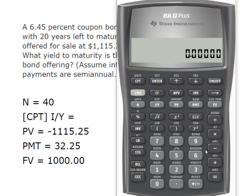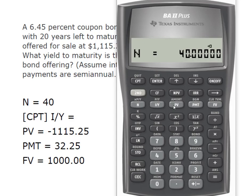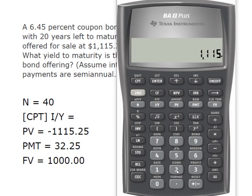All right, so we're going to go ahead and plug it in. We have an N of 40. Our present value is $1,115.25 — remember, make it a negative.